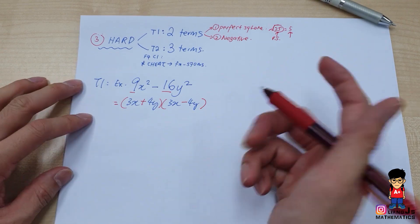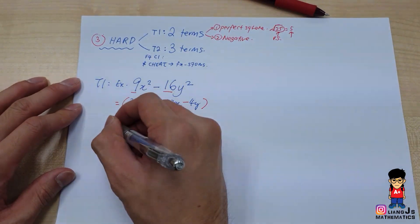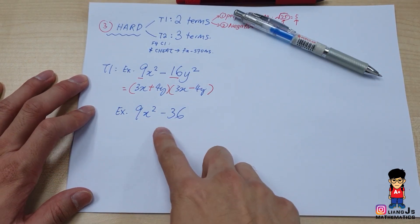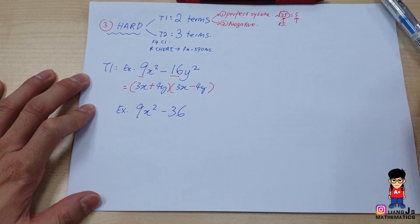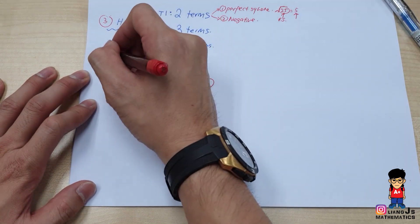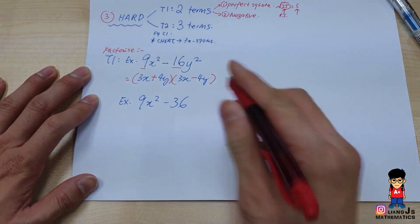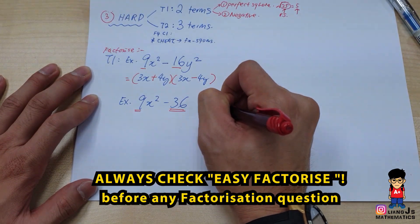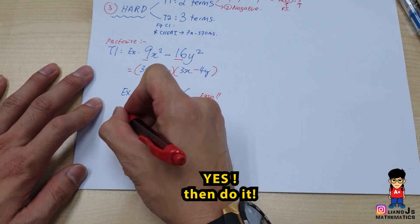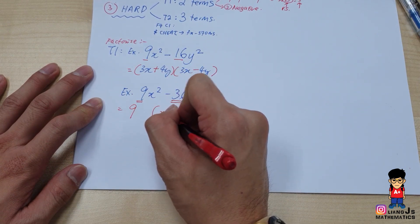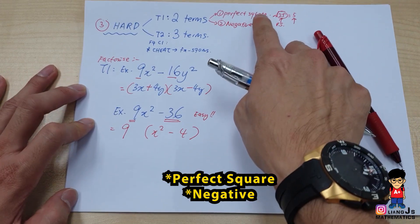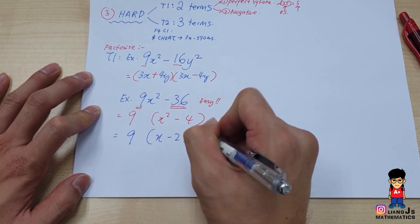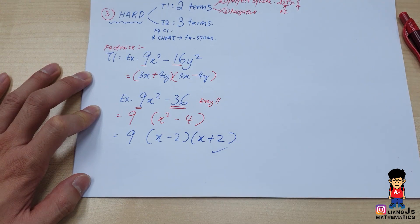Let's try another example: 9x² minus 36. A student would say the answer is (3x minus 6)(3x plus 6), but please — they will ask you to factorize it properly. So the first thing you do is look at 9 and 36 and see whether you can apply easy factorize — and the answer is yes. So take out the 9, leaving x² minus 4 inside, then do the perfect square negative hard factorize version: you get 9(x minus 2)(x plus 2). That's how we do it.